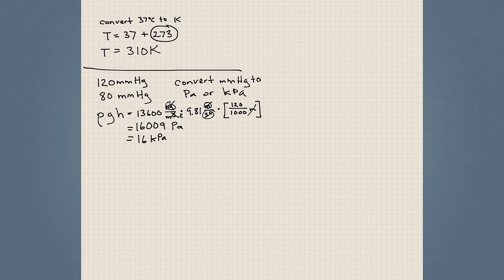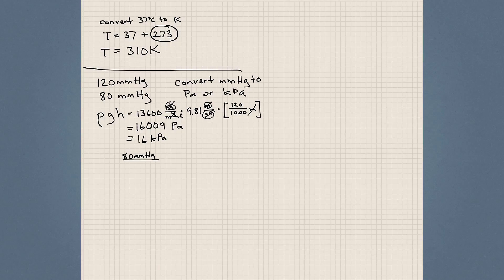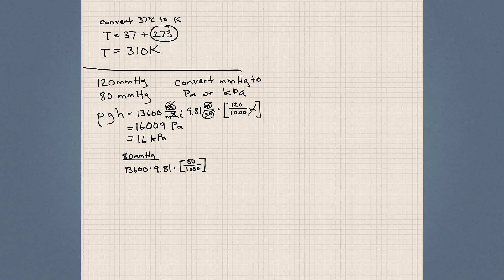So 120 millimeters of mercury is equivalent to about 16 kilopascals. Now let's convert 80 millimeters of mercury to pascals. Using the same formula — density of mercury times 9.81 times 0.08 meters — we get 10,673 pascals, or approximately 10.7 kilopascals.